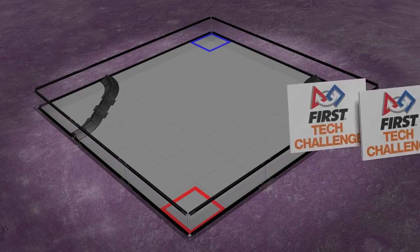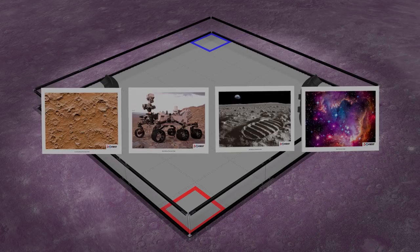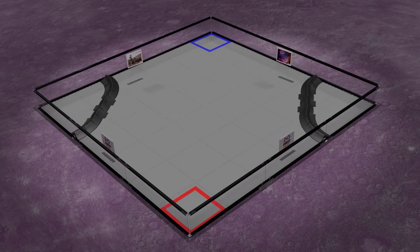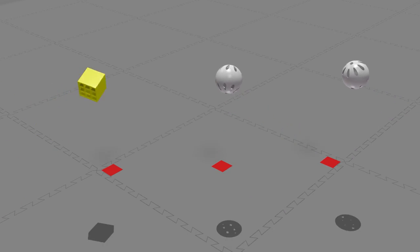Navigation targets are placed in the center of each field wall. Four sampling fields contain minerals: two silver spheres and one gold cube, which are randomly lined up in front of each corner.